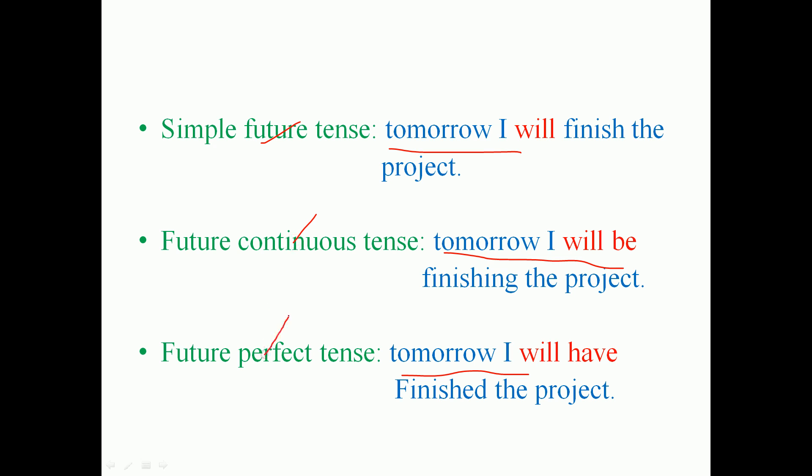Let me tell you the difference between future continuous tense and future perfect tense. Tomorrow morning at seven o'clock I will be reading the newspaper. By 7:30, I will have read the newspaper. Tomorrow morning at nine o'clock I will be going to Chennai. By 10:30, I will have gone to Chennai.